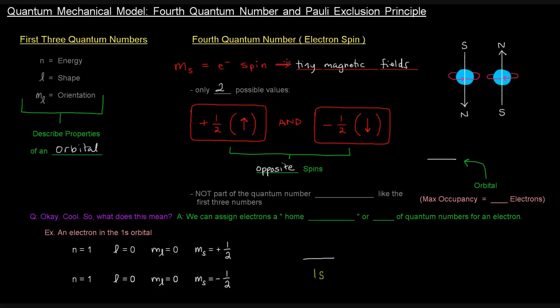So this fourth quantum number, since it's dealing with the electron, not with the orbital, it's not part of the quantum number hierarchy like the first three numbers.